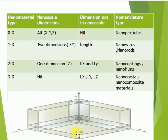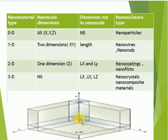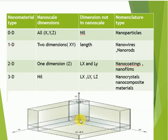Zero dimensional nano materials are those in which all dimensions — X, Y, and Z — are measured within the nano scale. Example: nanoparticles. One dimensional nano materials are those in which two dimensions out of three are measured within nano scale. Two dimensions are measured along X and Y axes, and one dimension is not in the nano scale. Examples: nanowires and nanorods.